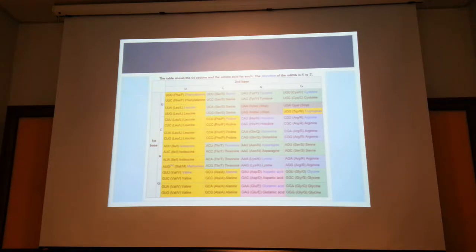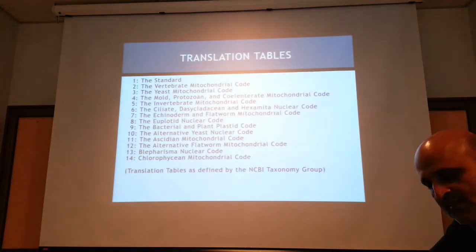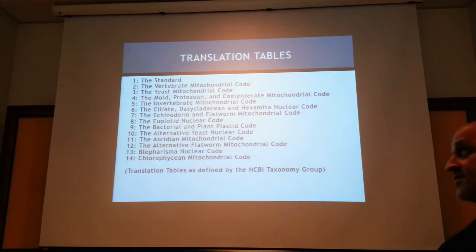The tRNAs for those rare codons are present at a lower concentration, so you don't get those proteins expressed, or sometimes you get wrongly inserted amino acids which will change the entire protein. So codon usage is very important, and we have different translation tables — number one is the standard generalized consensus table.